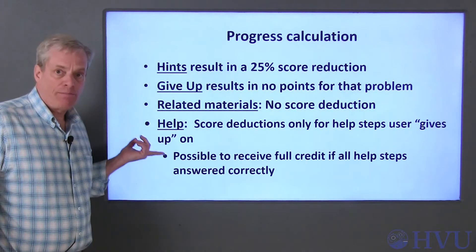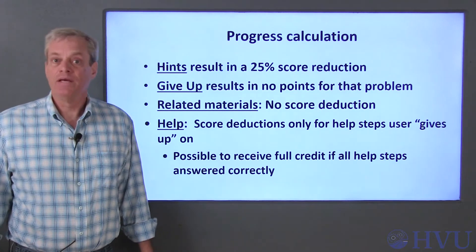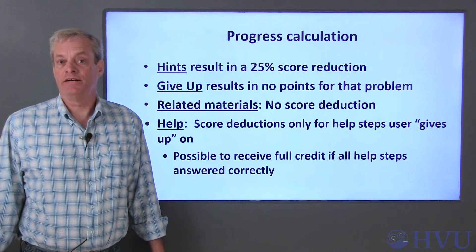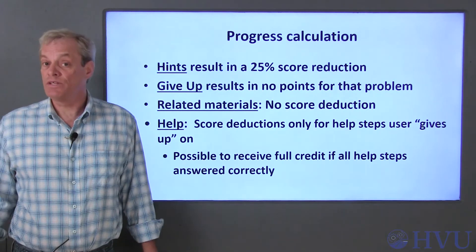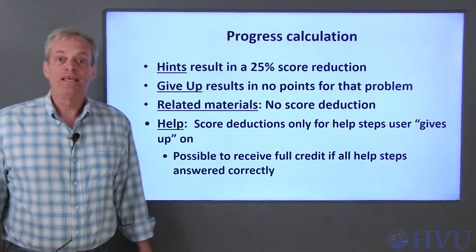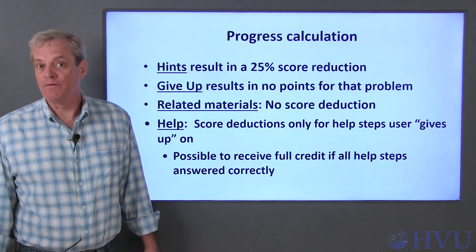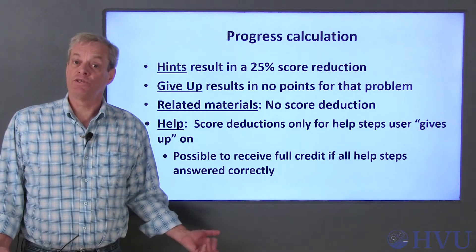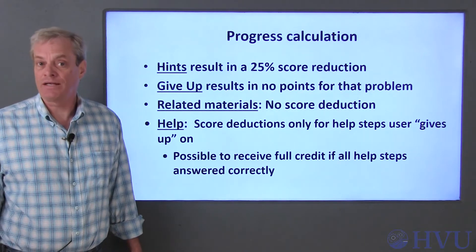The help option allows students to work through a problem step by step. Each help step is allocated a number of points. If the help step question is answered correctly, the student is awarded those points. Giving up on a help step results in no credit for that step. It is possible for a student to receive full points for a problem if they answer each help step correctly.